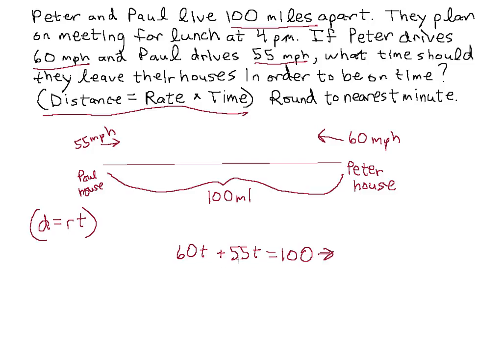We can combine these two. This gives us 60 and 55 is 115T equals 100. We want to isolate our variable, so we'll divide by the number out front. We'll do the same thing on this side. 115 and 115 cancel. That leaves us with T equals 100 over 115. And we always want to simplify our rational numbers. And this simplifies, if we take out a factor of five, simplifies to 20 over 23.